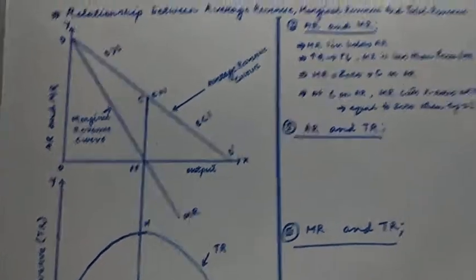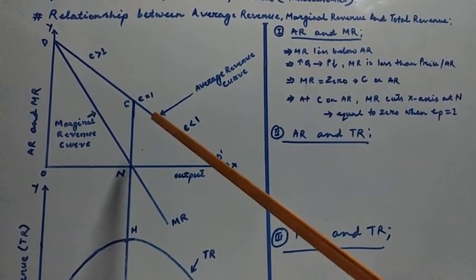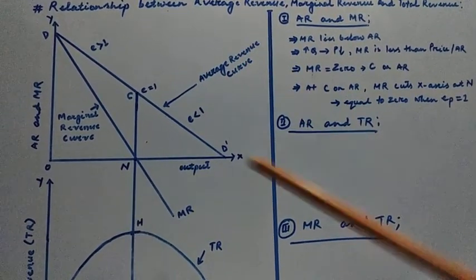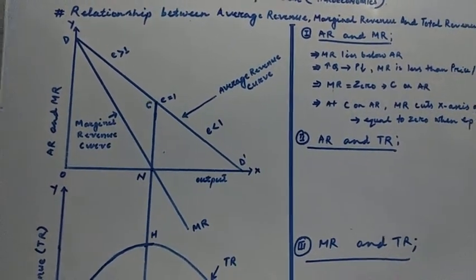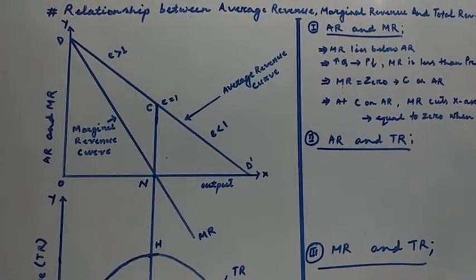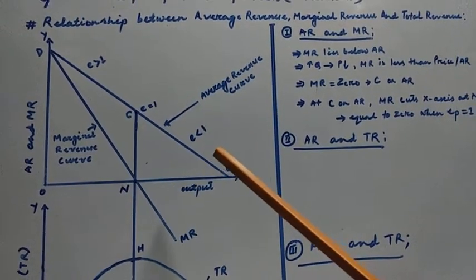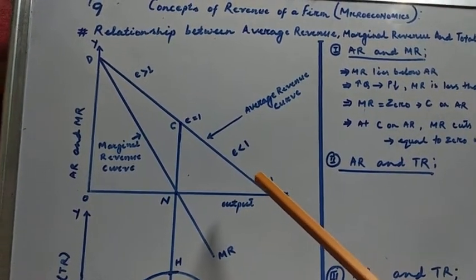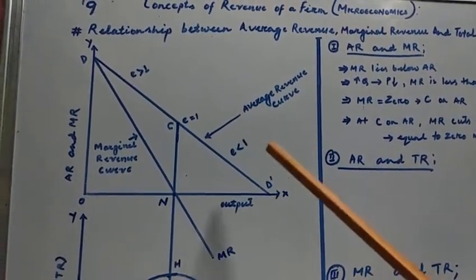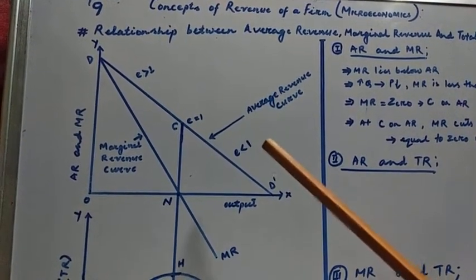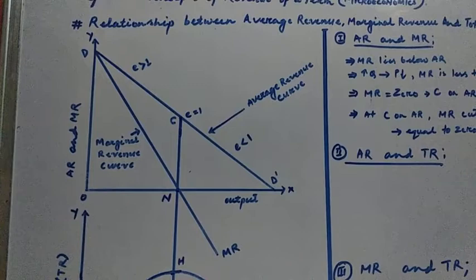We have graphically shown the relationship between average revenue and marginal revenue in the upper side of the diagram. Keeping in mind the three concepts of revenue of business firms, in the upper part of figure 7 we have drawn a straight line demand curve, which is also the average revenue. The demand curve is the same as the average revenue curve of the firm — a straight line DD' downward sloping curve.